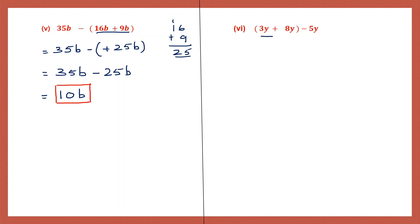Question 6. Again we have brackets, so we're going to open those brackets first. 3y plus 8y: 3 plus 8 is 11. 11y minus 5y: 11 minus 5 is 6. So 6y. The answer to question 6 is 6y.